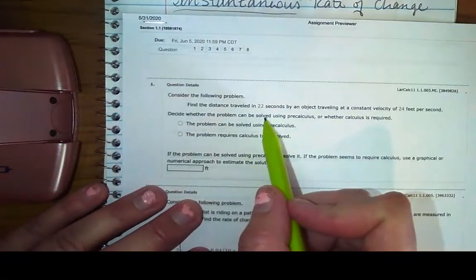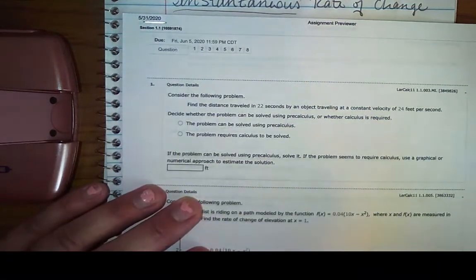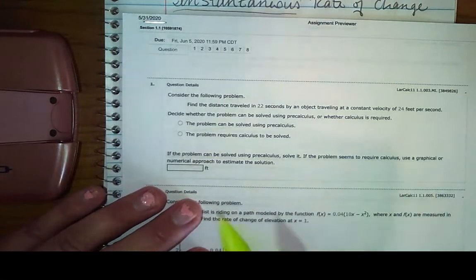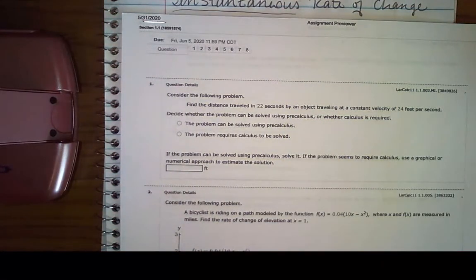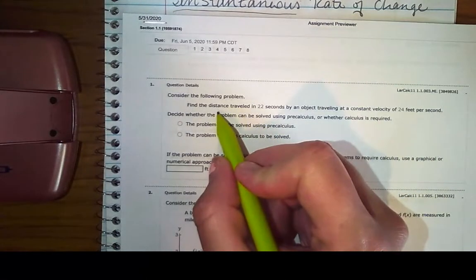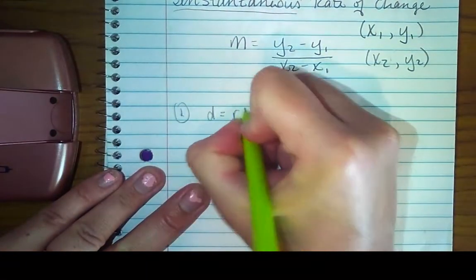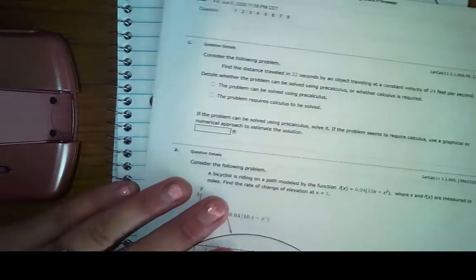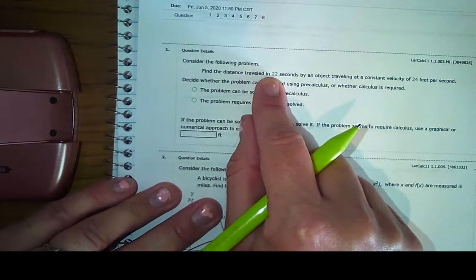So we want to look at question number one. It says, find the distance traveled in 22 seconds by an object traveling at a constant velocity of 24 feet per second. Decide whether it can be solved using pre-calculus, or whether calculus is required. So in this context, pre-calculus is not the course. It's anything before calculus. So your question is, do I know how to solve this yet? So if I know that distance equals rate times time.